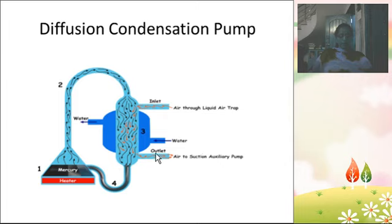Pressure as low as 10 power minus 5 mm of Hg is obtained with the use of this diffusion condensation pump. It is used to produce low pressure in x-ray tubes, photoelectric cells, radio valves, and electric valves.